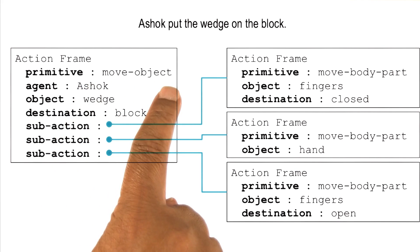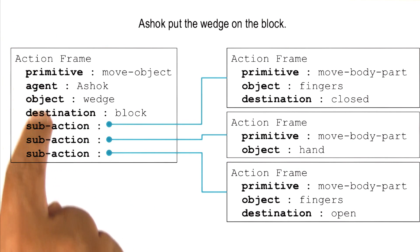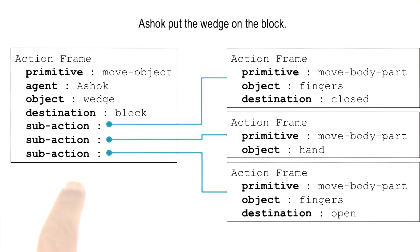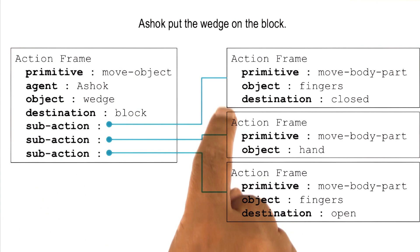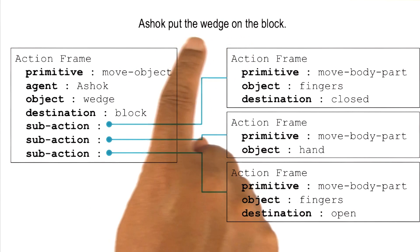Move object was indeed a primitive action, related to the various superficial forms in which words can occur in a sentence. As an example, transported, carried, or moved. However, this primitive action move object can have its own story in terms of further decomposition. Notice this particular decomposition, this particular story, is specific to the structure of the sentence where Ashok puts the wedge on the block.